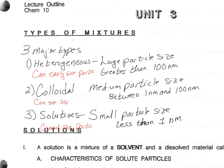Colloidal mixtures, on the other hand, are easily seen under a bright light — that is only when you can see the parts. Under normal lighting you do not see them. An example of this would be the dust particles you can see when a bright light shines through your window.